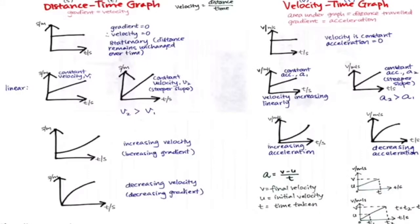On the left are some examples of distance-time graphs, and on the right, some velocity-time graphs. For distance-time graphs: if the gradient is zero, the object is not moving and velocity remains zero. If the line is linear, velocity is present and constant — the object is moving at constant speed. If the graph is a U-shape, velocity is non-uniform and increasing, meaning the object is moving faster and faster. If the graph is an N-shape, velocity is non-uniform and decreasing, meaning the object is slowing down.